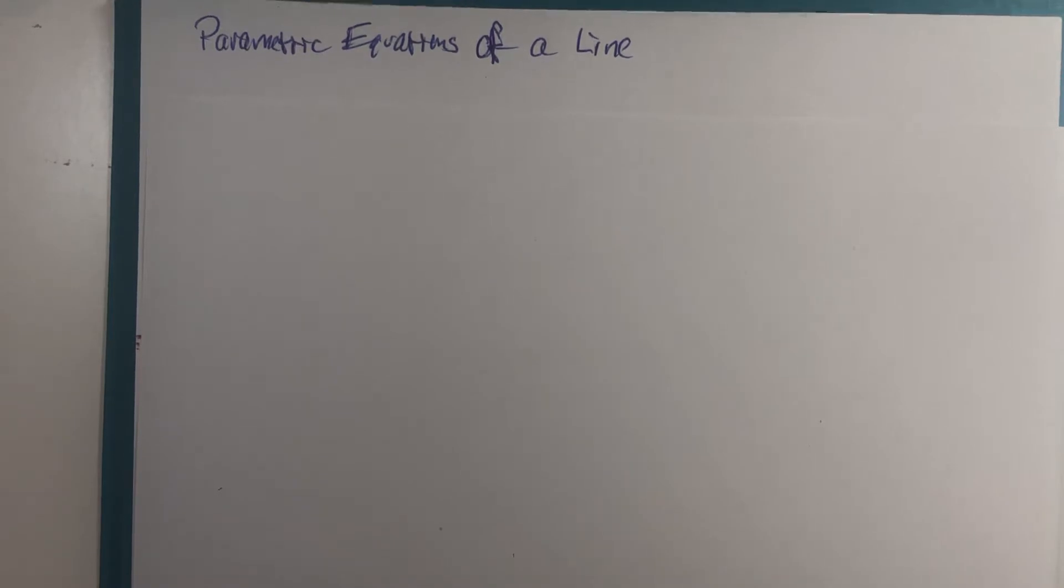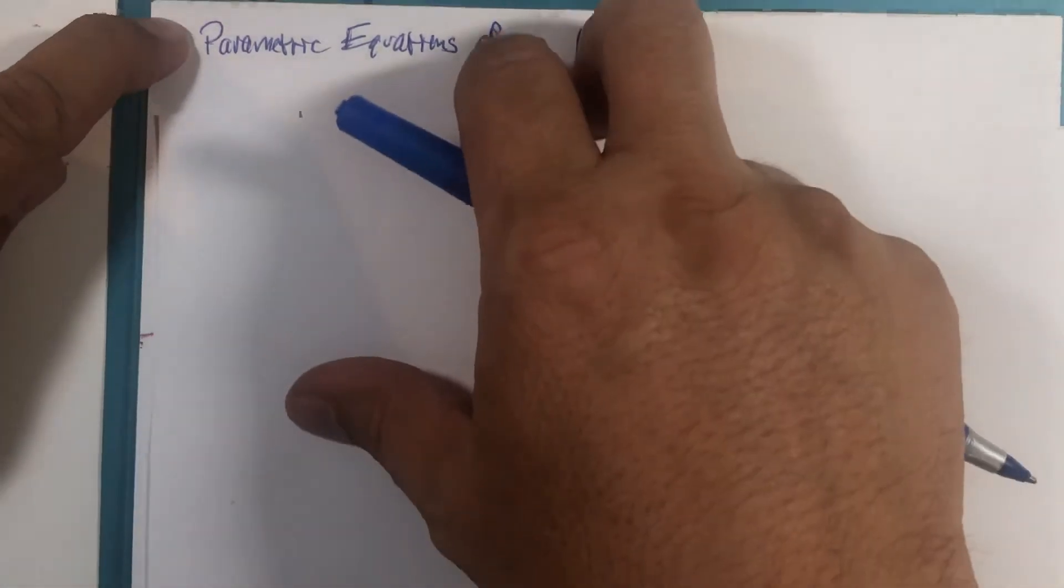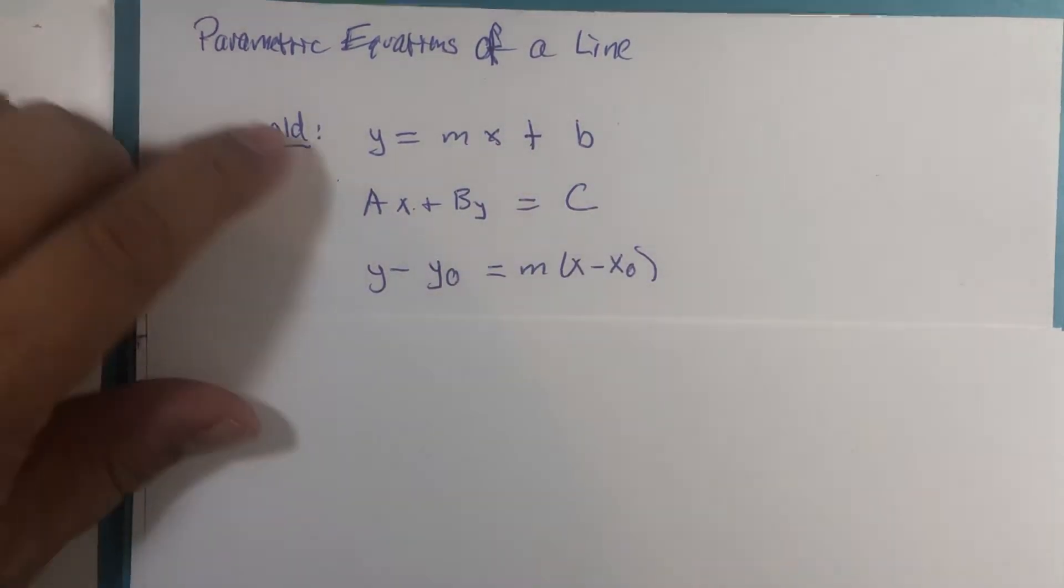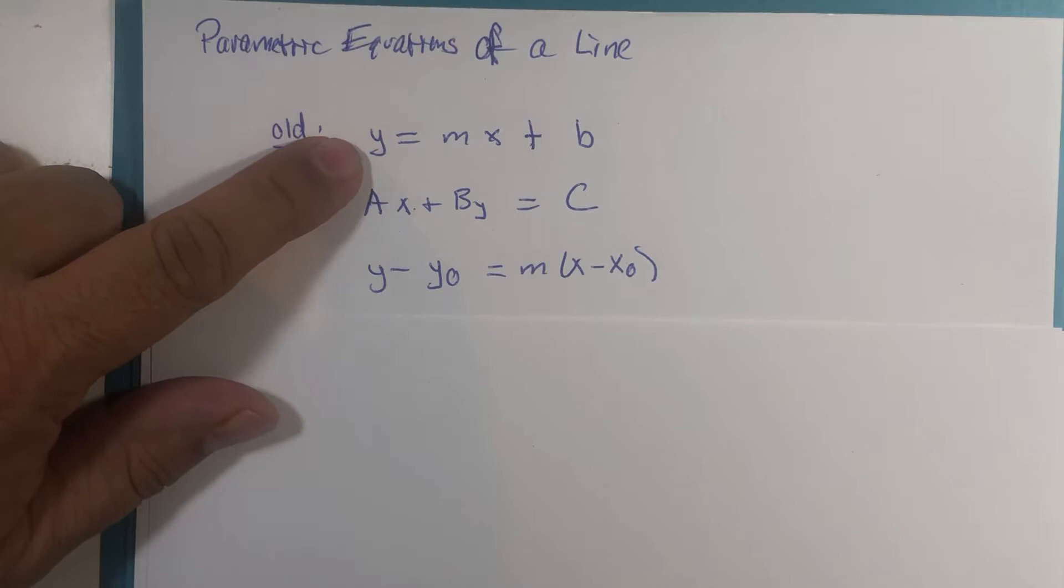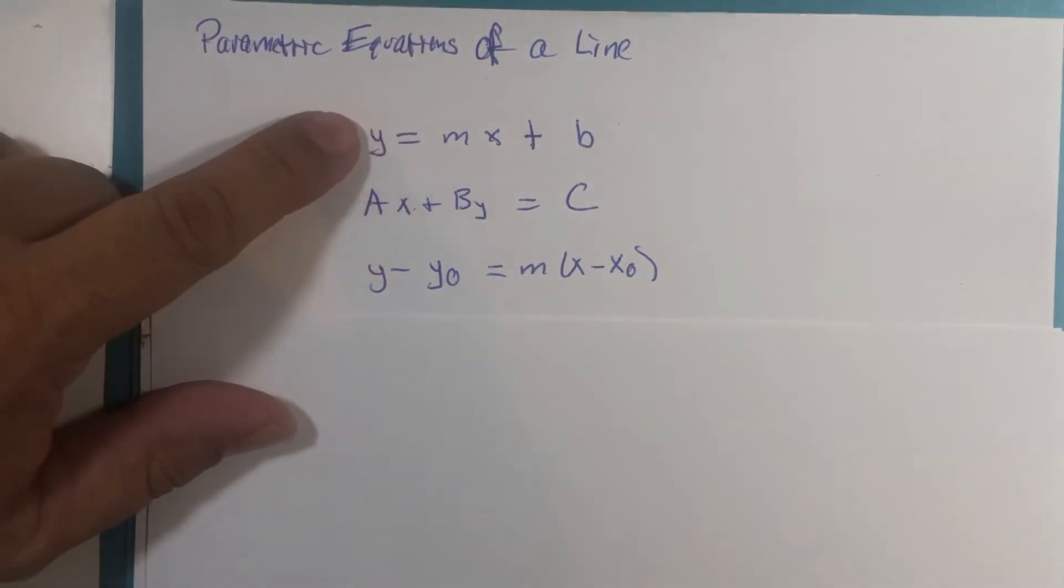It's the study of the parametric equations of a line. Now just as a quick little reminder to you all, we probably recognize the equation of a line. In the Western world this is called the slope and intercept equation, y = mx + b. This value m is the slope.